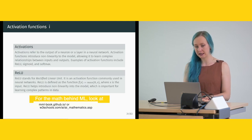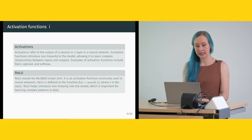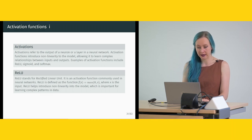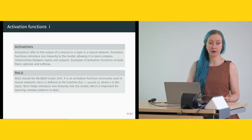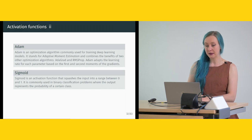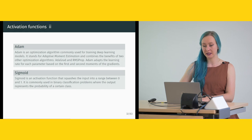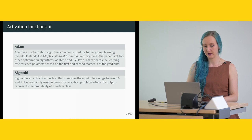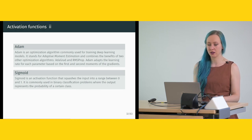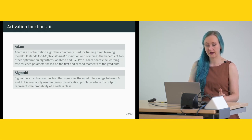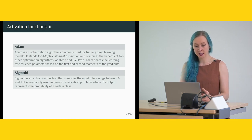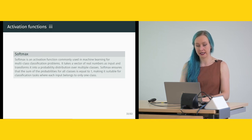Activation functions refer to the output of a neuron or layer in a neural network. They introduce non-linearity into the model, allowing it to learn complex relationships. Examples are ReLU (Rectified Linear Unit), sigmoid, and softmax. Adam is an optimization algorithm that stands for Adaptive Moment Estimation and combines the benefits of several other algorithms. Sigmoid squashes input into a range between 0 and 1, commonly used in binary classification where the output represents the probability of a class. Softmax is used for multi-class classification problems.